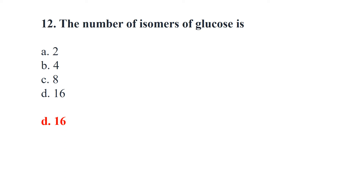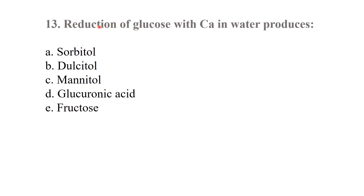The number of isomers of glucose is 16. Reduction of glucose with calcium in water produces — options: sorbitol, dulcitol, mannitol, glucuronic acid, or fructose. The best answer is sorbitol.